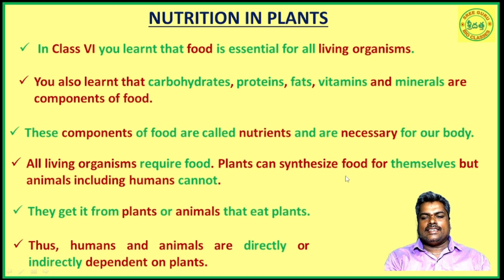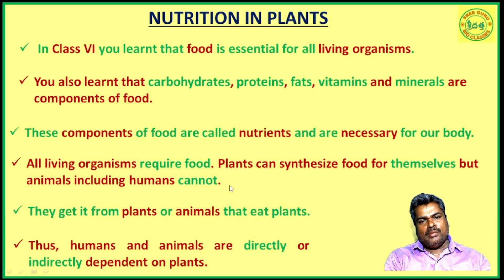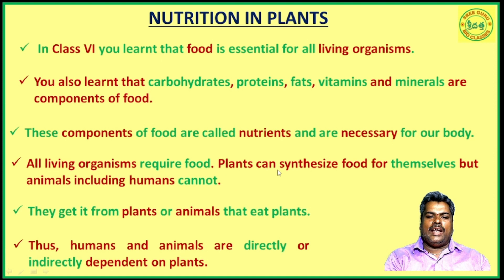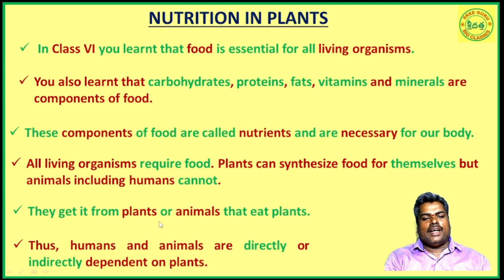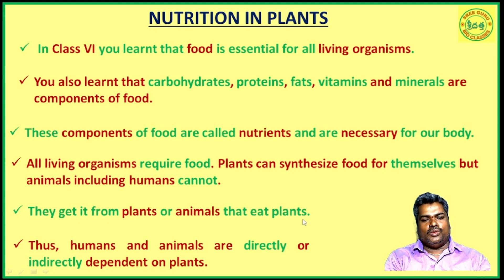Plants can synthesize food for themselves, but animals including humans cannot. Animals and human beings cannot prepare their own food materials. They get it from plants or animals that eat plants — they depend directly or indirectly on plants. Thus, humans and animals are directly or indirectly dependent on plants.